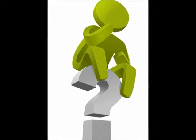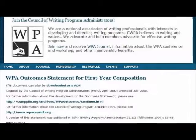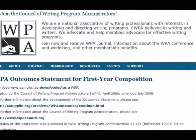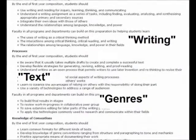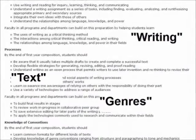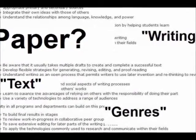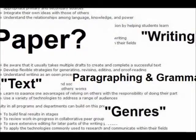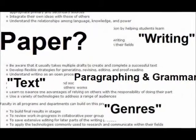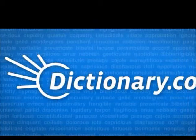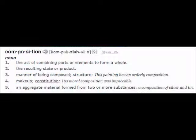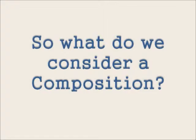Who gets to decide what a composition is? The WPA outcome statement for first-year composition focuses a lot on the word "writing." And though they use the word "text" and "genres," they never mention the word "paper." It is easy to infer that they mean a paper, since some of their outcomes like paragraphing and grammar deal with what we consider a paper, but they never mention it. Dictionary.com defines composition as "the act of combining parts or elements to form a whole" — but that seems awfully broad, and might be too broad for most people.